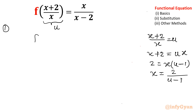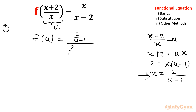Now the left hand side is f of u. The right hand side is a function of x, so I need to substitute x from this equation. That will be 2 over u minus 1, divided by 2 over u minus 1 minus 2. You can multiply numerator and denominator by u minus 1.